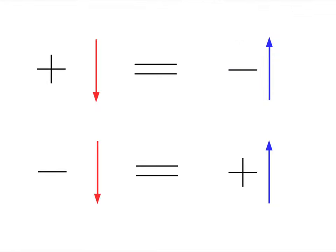So, in summary, adding a negative number is equivalent to subtracting a positive number of the same size, and subtracting a negative number is equivalent to adding a positive number of the same size.